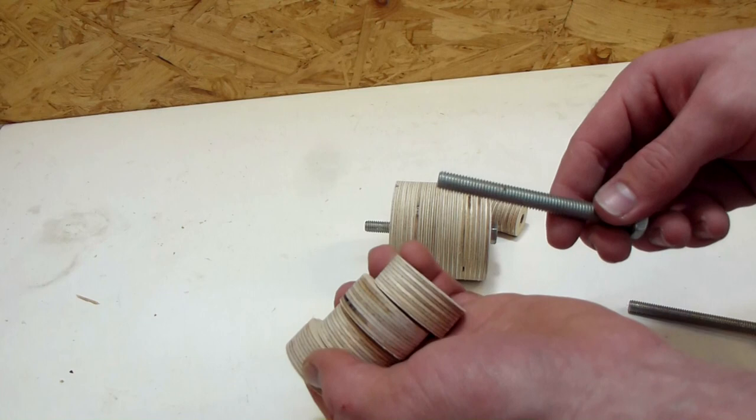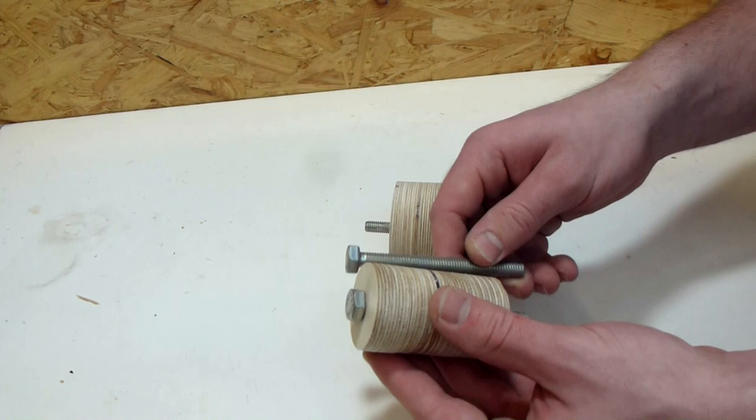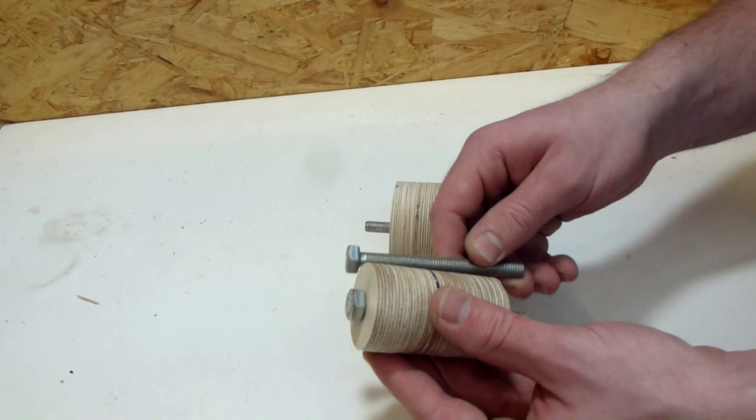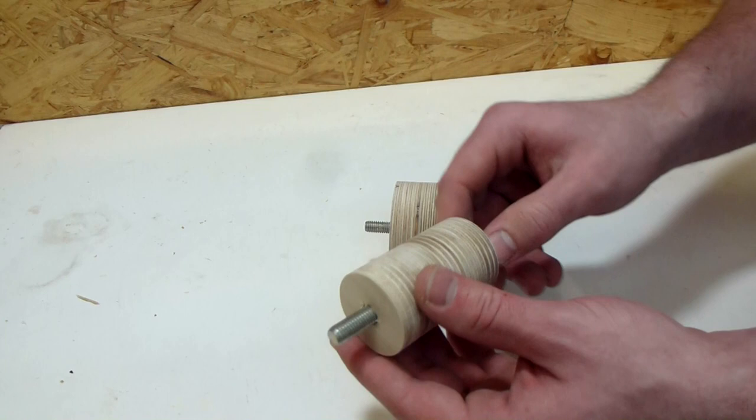The only problem with these bolts is that they are a little short. I could just buy longer ones but that would take a trip to a hardware store. So what I want to do instead is to sink the head into the bottom disc a little bit so this end sticks out further.